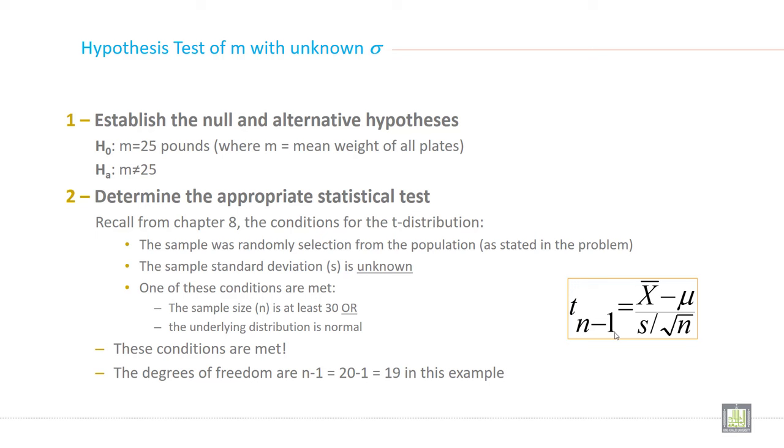So first step, again the same, write null and alternate hypothesis. So what is null hypothesis in this case? Null hypothesis is H0: mu equals 25 pounds, where m is the mean weight of all plates. And alternate hypothesis H1 or HA: mu is not equal to 25. This is the first step.